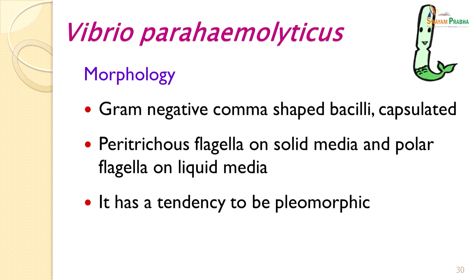Vibrio parahaemolyticus is a Gram-negative comma-shaped bacillus, capsulated. It has peritrichous flagella on solid medium and a polar flagellum on liquid medium. Only on liquid medium does it resemble the polar flagellum of Vibrio cholerae. It has a tendency to be pleomorphic, so you can see all sizes in any smear — very small or larger varieties of the organism.